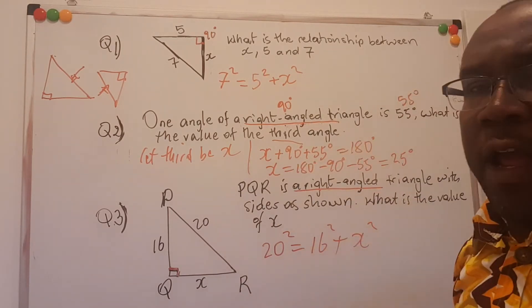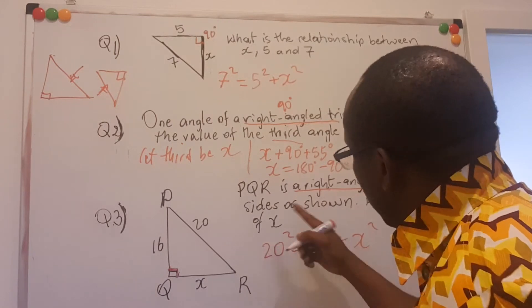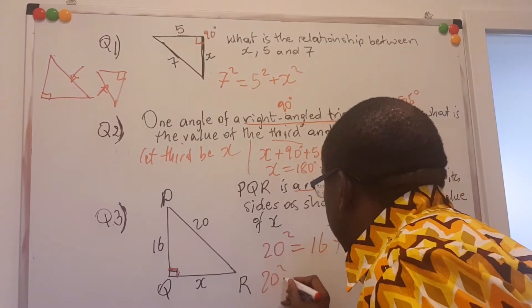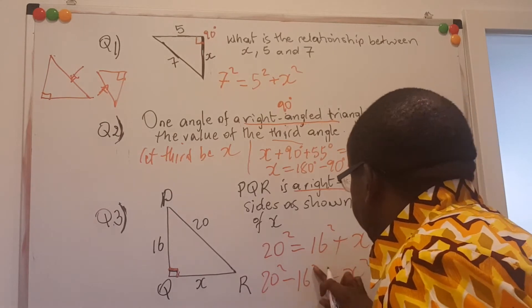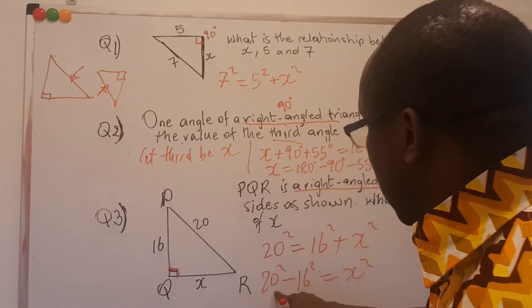I'm allowed to look for x squared. I can take 16 squared to this other side and get 20 squared minus 16 squared is equal to x squared. Of course, you can look for that.